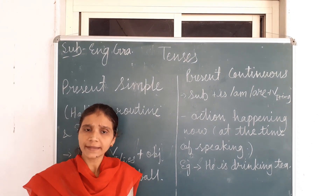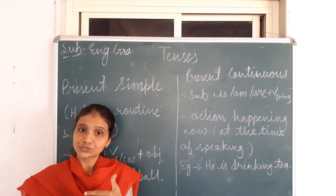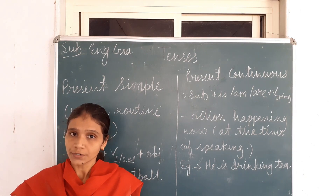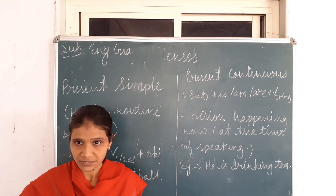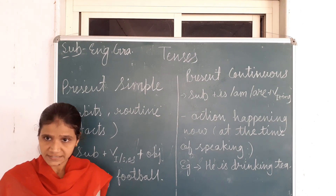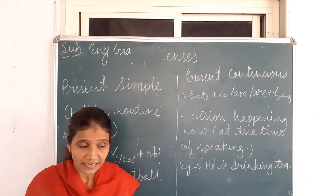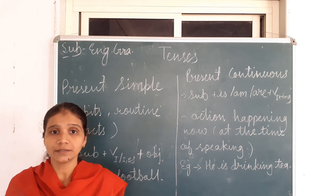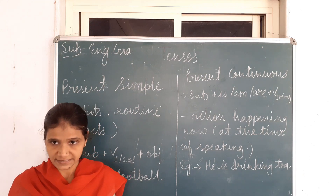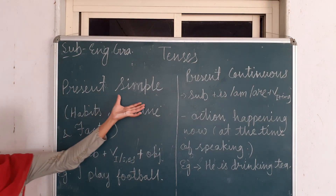What do you understand by Tenses? Tenses means a verb which shows our present, past, or future actions. We all know that there are three types of Tenses: Present Tense, Past Tense, and Future Tense. And each tense is divided into four parts, so there are 12 tenses in total. The first one is Present Simple Tense.